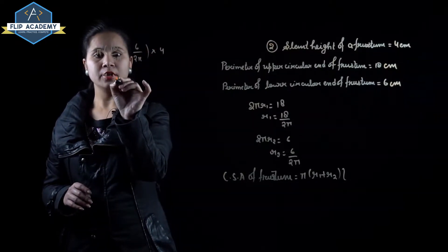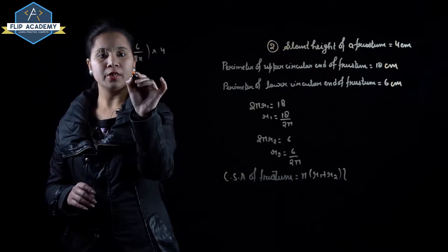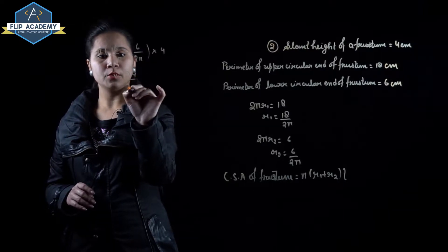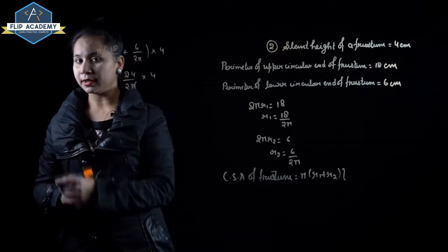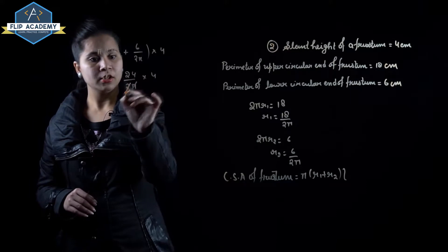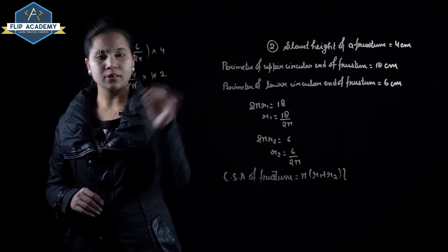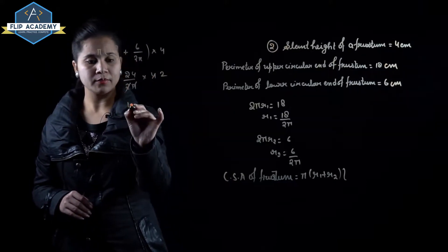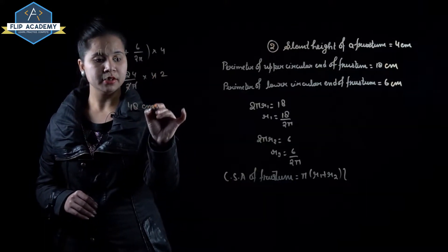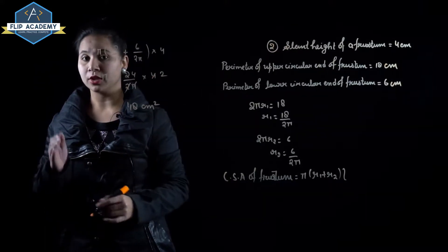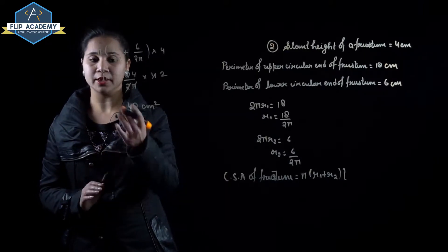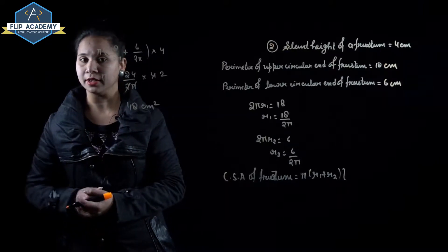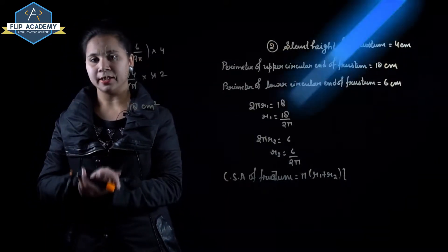So pi into 24 upon 2 pi into 4. Pi cancels with pi, and 2 divides into 4 giving 2, so it becomes 48 centimeter square. The curved surface area of the frustum is equal to 48 centimeter square. Question number 2 is complete.